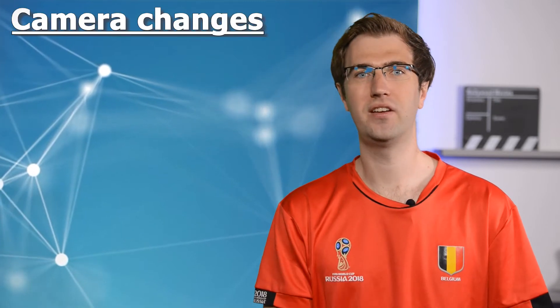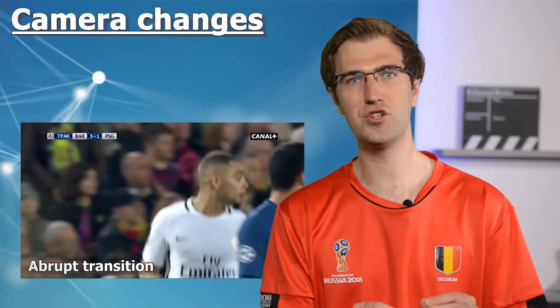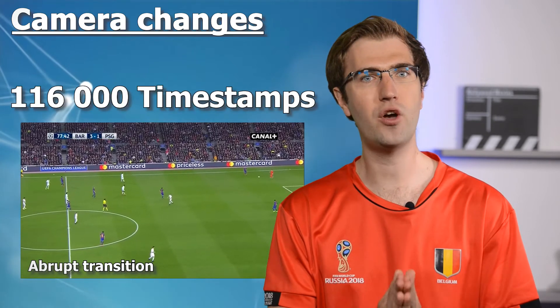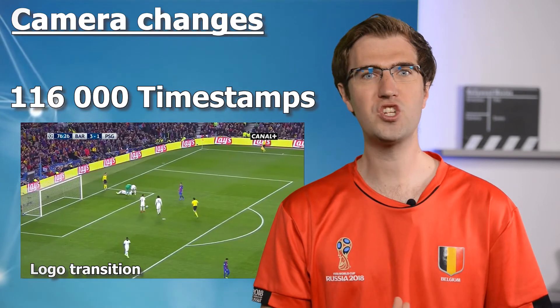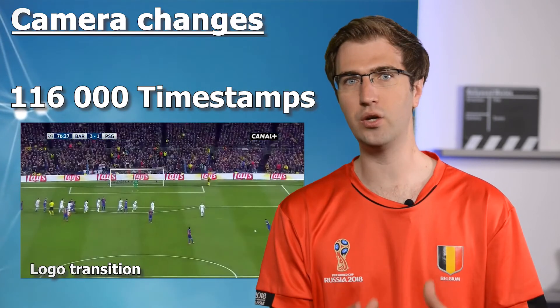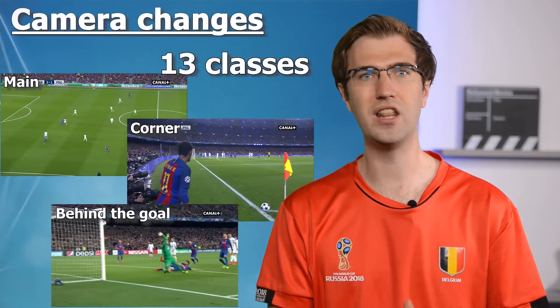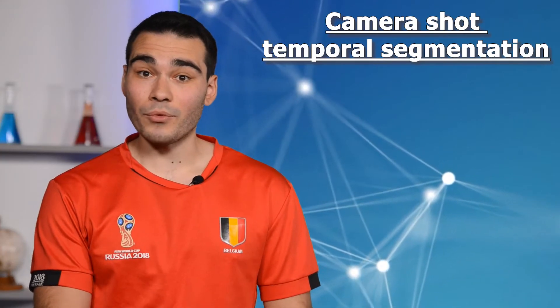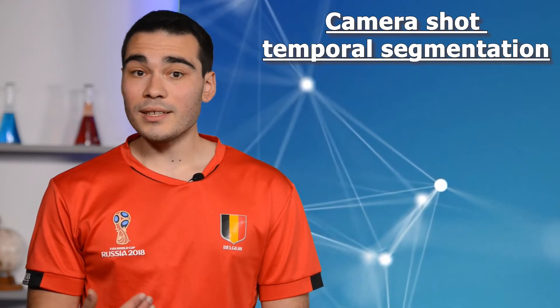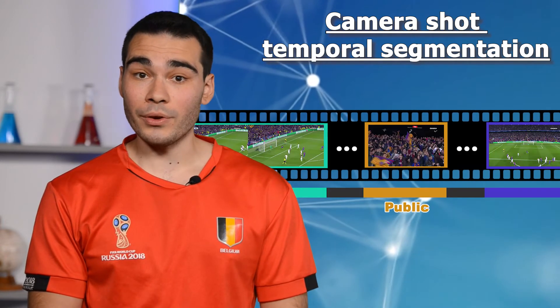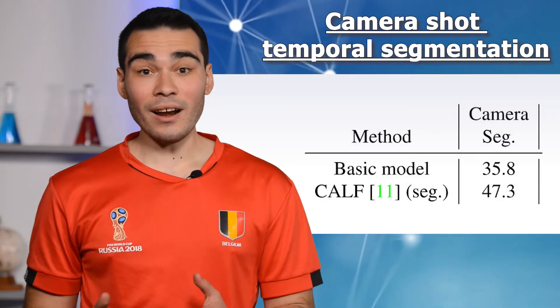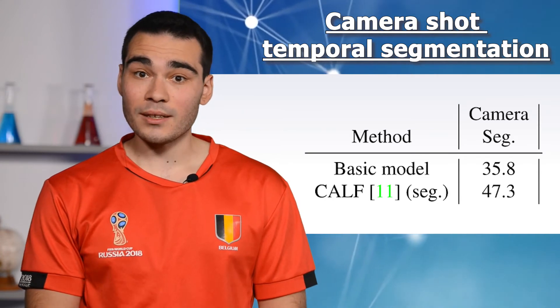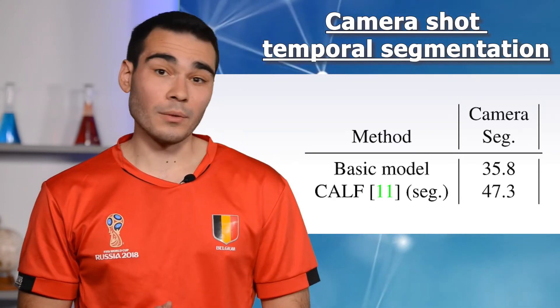Let's move on to cameras. We annotate every camera change for 200 games, totaling more than 116,000 temporal anchors. With that, we annotate which type of camera is used for each sequence — main, corner, behind the goal, and so on — in 13 classes. Therefore, our second task is camera shot temporal segmentation, which consists in classifying each video frame among our 13 camera types. Again, we tested several methods, and CALF is better than simple baselines, indicating that the task requires more than simplistic approaches.